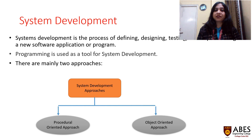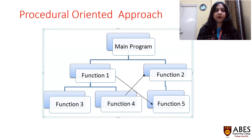System development is a process of defining, designing, and testing a new software application or program. There are two approaches of system development: the procedure-oriented approach and the object-oriented approach. Programming is used as a tool for system development. In the procedure-oriented approach, there is a main program and we consider functions incorporated in it, along with sub-functions. This approach is basically based on identifying the functions.